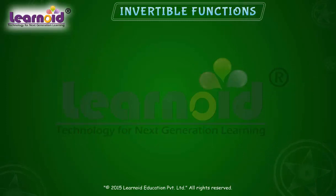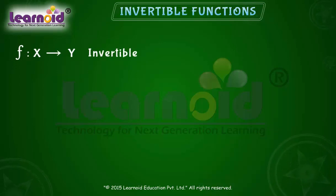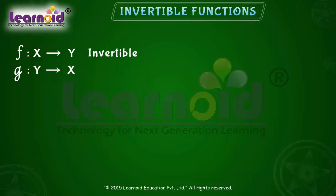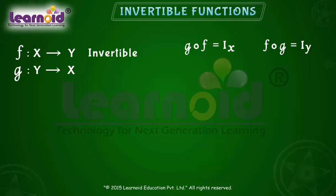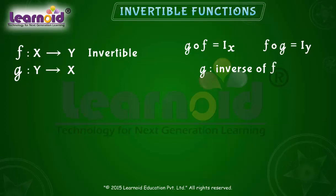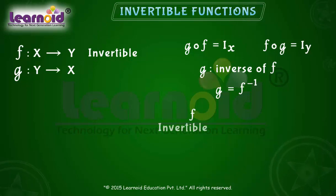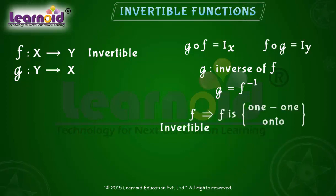This means a function f from X to Y is invertible if there exists a function g from Y to X such that gof = I_X and fog = I_Y. The function g is called the inverse of f and is denoted by f⁻¹. For a function to be invertible, it must be one-one and onto.